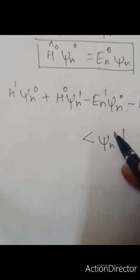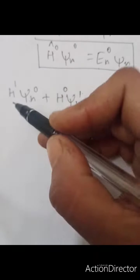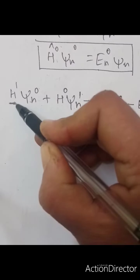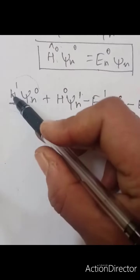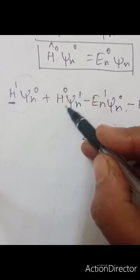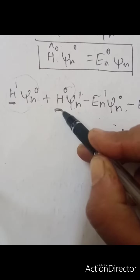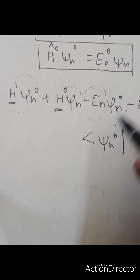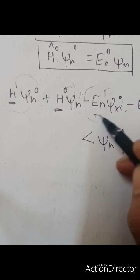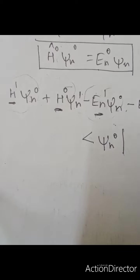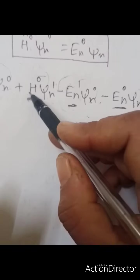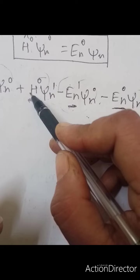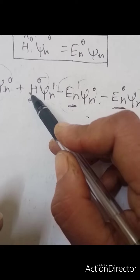To solve the first-order correction equation, we operate each part with the wave function. We take the left side of each term — the parts involving H₁, H₀, Eₙ¹, and Eₙ⁰ — and operate them with ψₙ⁰.